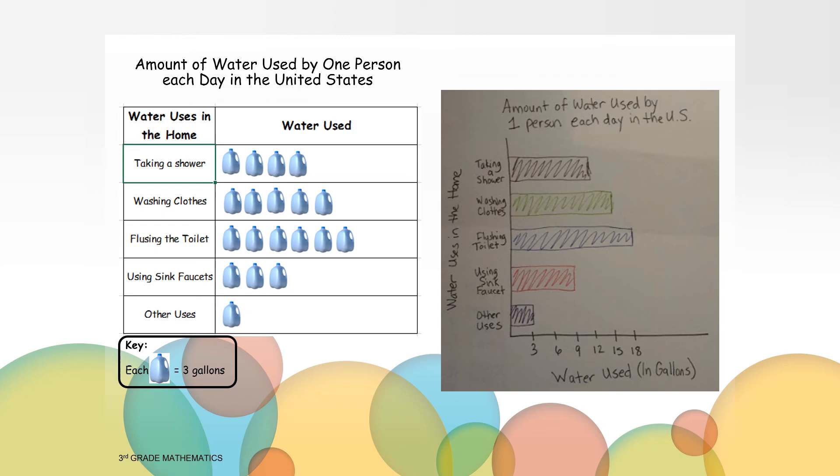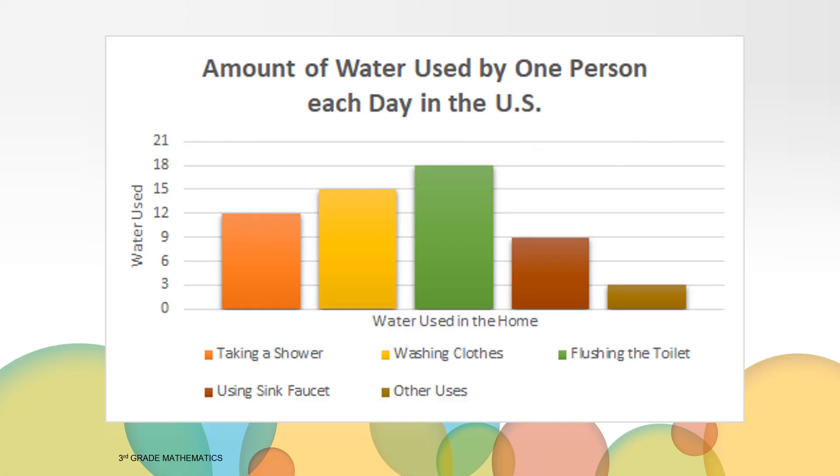Also, a pictograph always has a key and a bar graph does not necessarily need one. We created today's bar graph to have horizontal bars in order to match our pictograph. But you can also create a bar graph with vertical bars like the one shown here. This bar graph was created on a computer instead of drawn, but the data is the same.